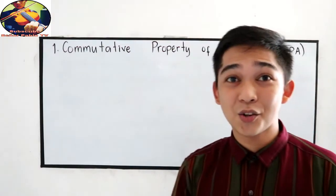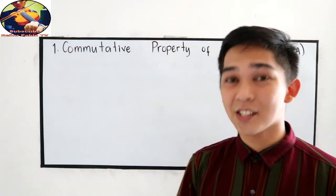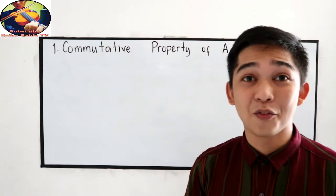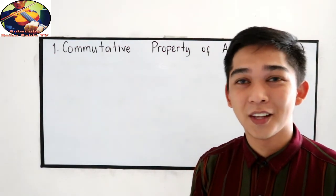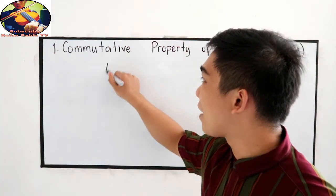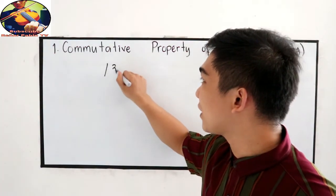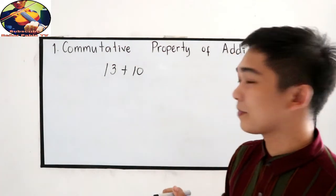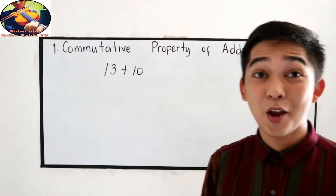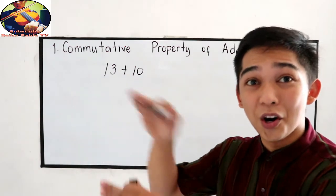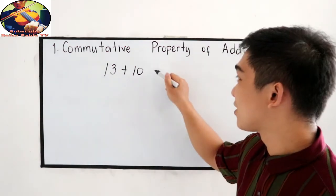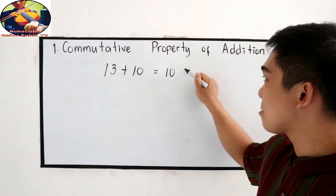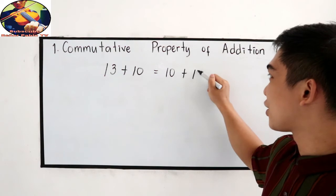Now, let us try some exercises using the commutative property of addition. What if I have 13 plus 10? By commutative, change the order. So that is also equal to 10 plus 13.